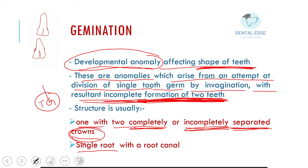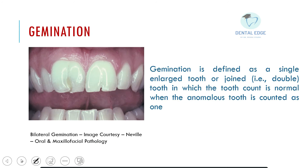Usually there is a single root with a root canal. Looking at the image, this structure shows germination — one tooth germ has attempted to divide into two, and we can see two incompletely separated crowns. We can also see bilateral germination on both sides in this image.